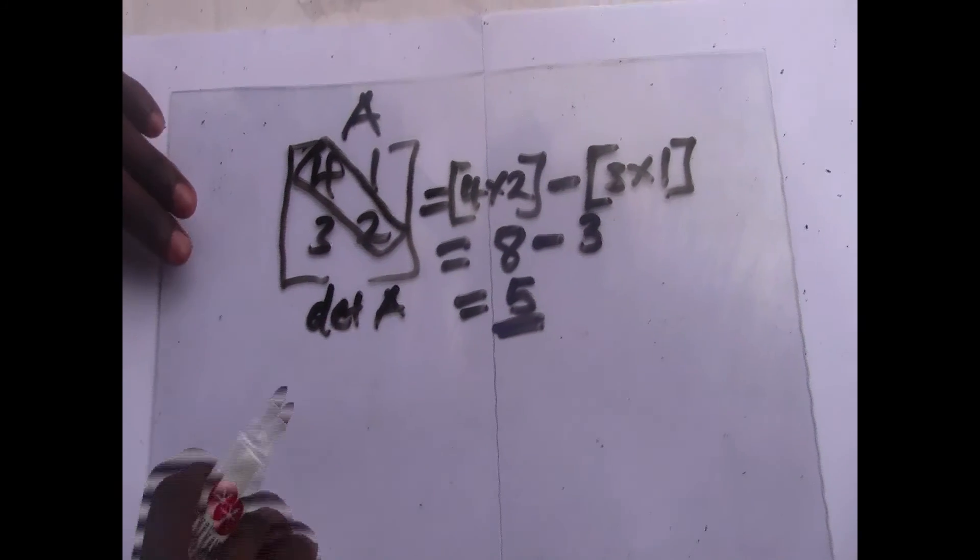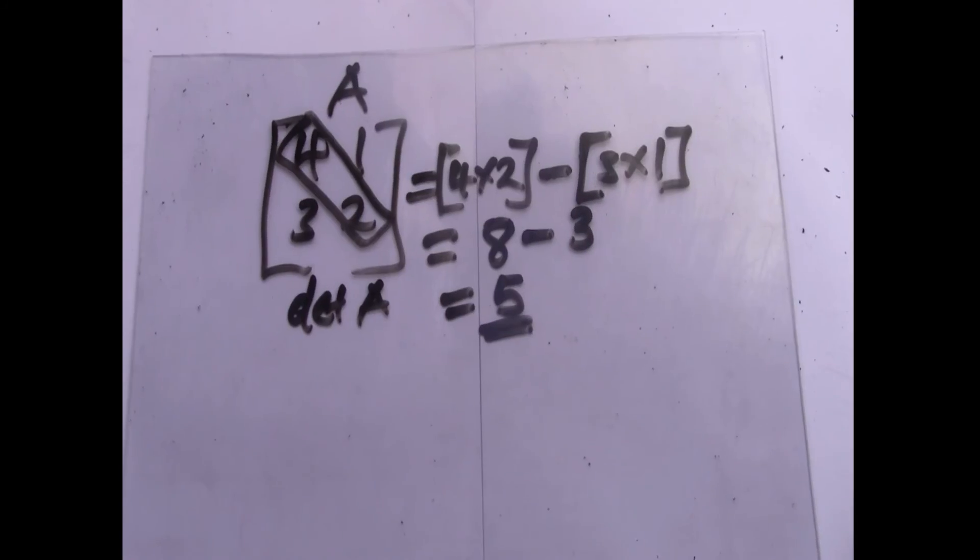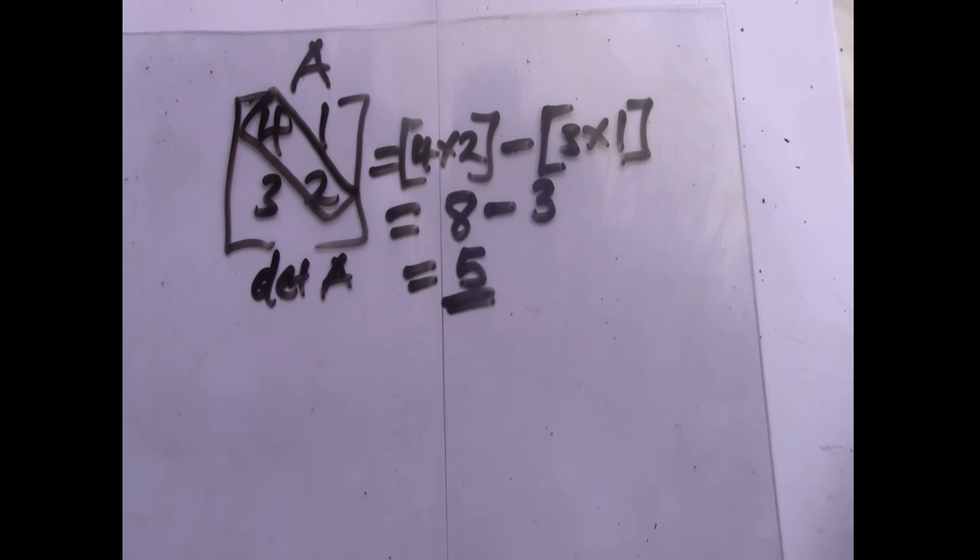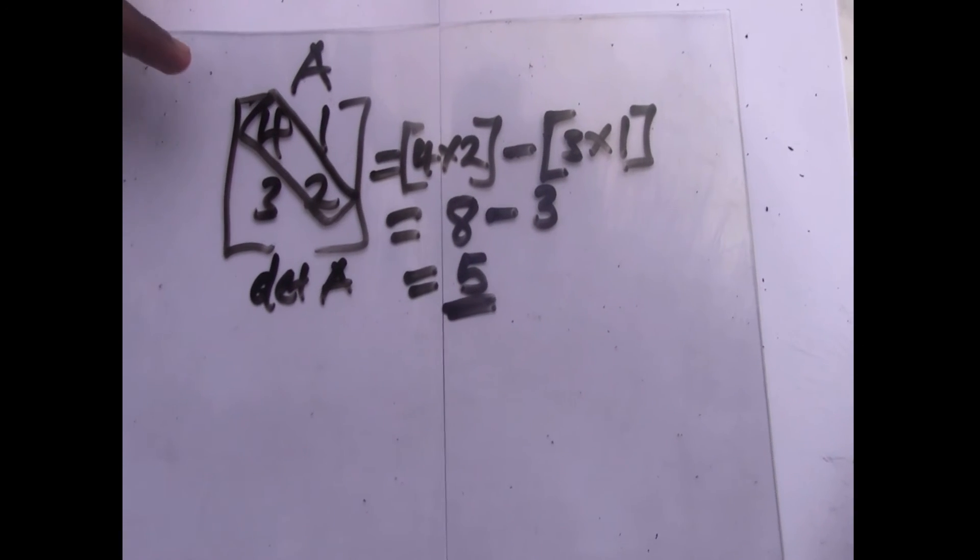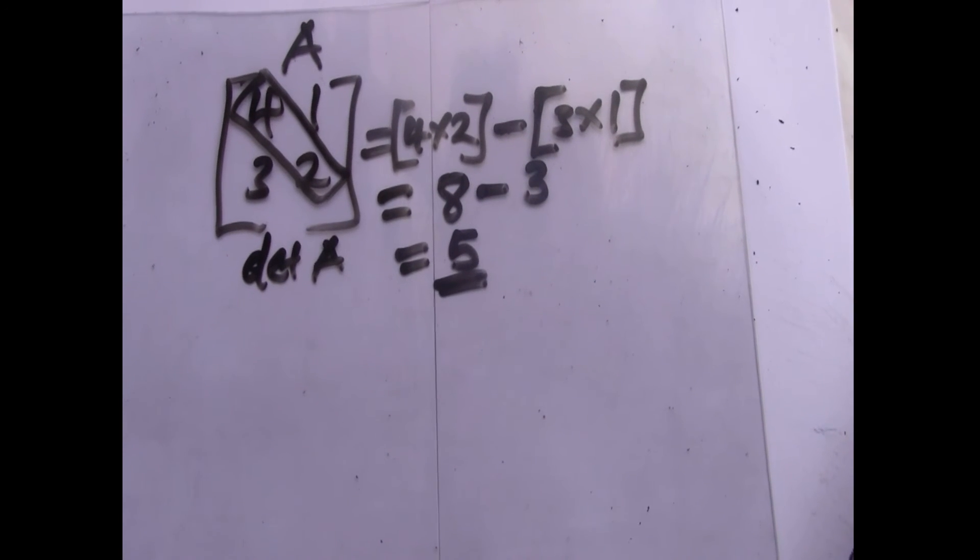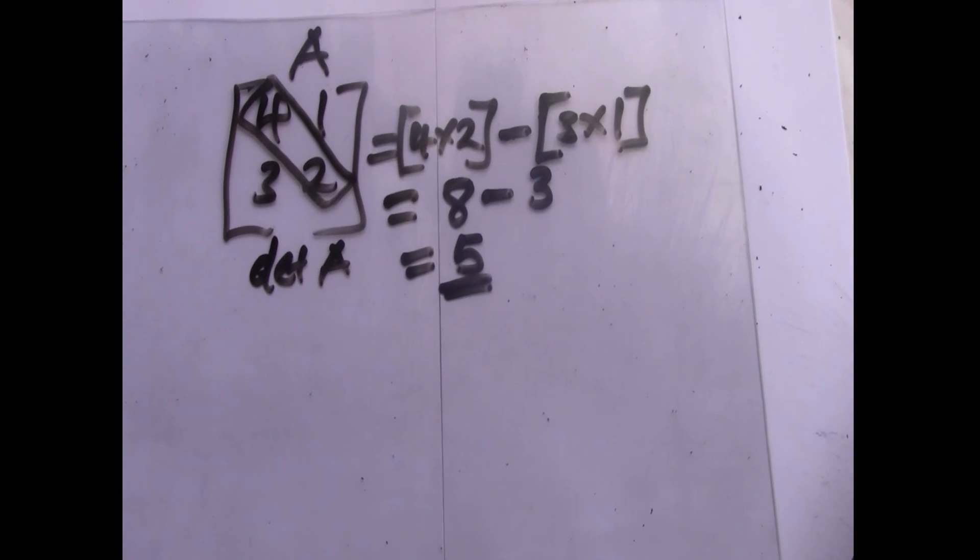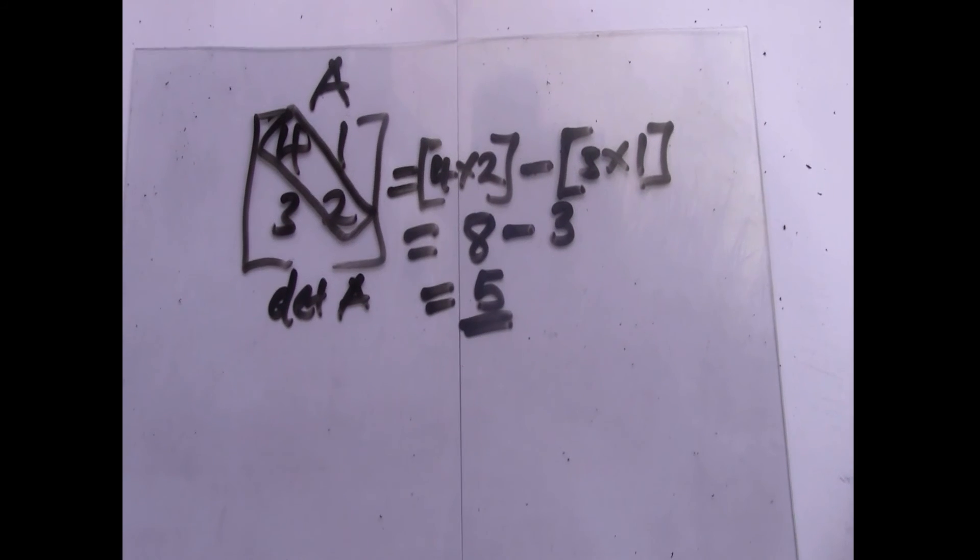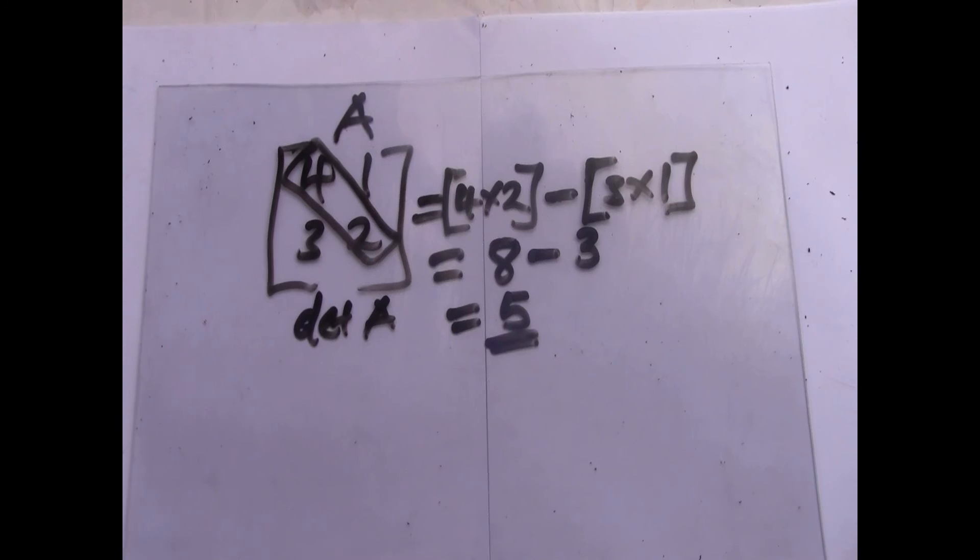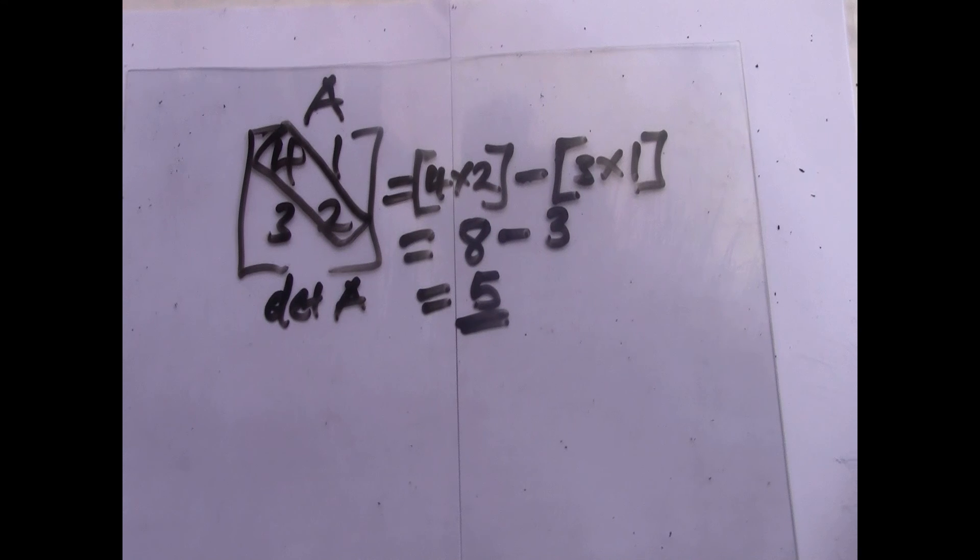So this is the determinant of this matrix. And that's how you go about the determinant of a matrix. Product of the leading diagonal subtracted by the product of the secondary diagonal. You get your determinant of a matrix. So you can pause the video and then follow the procedure from the top slowly.